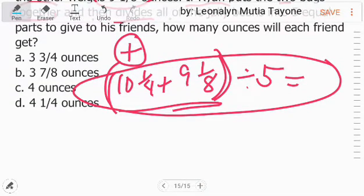Let's do first what is inside the parenthesis. Adding mixed numbers - we can add the fractions first. The least common denominator of 1/4 and 1/8 is 8. So 8 divided by 4 equals 2. 2 times 1 equals 2.